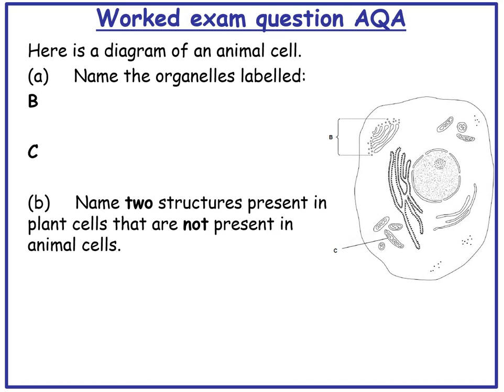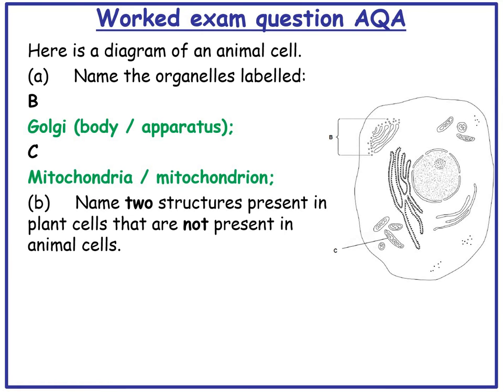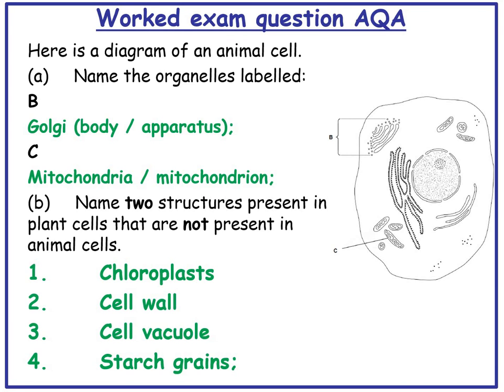Working through an AQA exam question: given a diagram of an animal cell, name the organelles labelled B and C. B is the Golgi body or Golgi apparatus, and C is the mitochondria. Name two structures present in plant cells that are not present in animal cells — you could say chloroplasts, cell wall, cell vacuole, or starch grains.